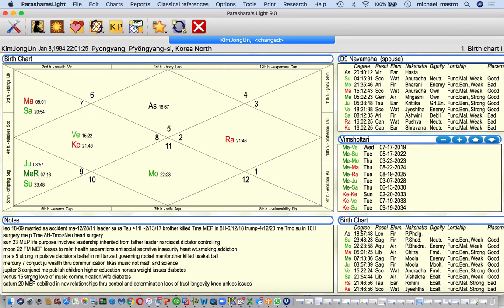Venus is at 15 degrees. It's fairly strong in this chart. Gives him that love of music, and communication through performing arts. It's in this house of exhibitions and creativity. Also represents wife in his chart and pancreas, which can affect the diabetes.